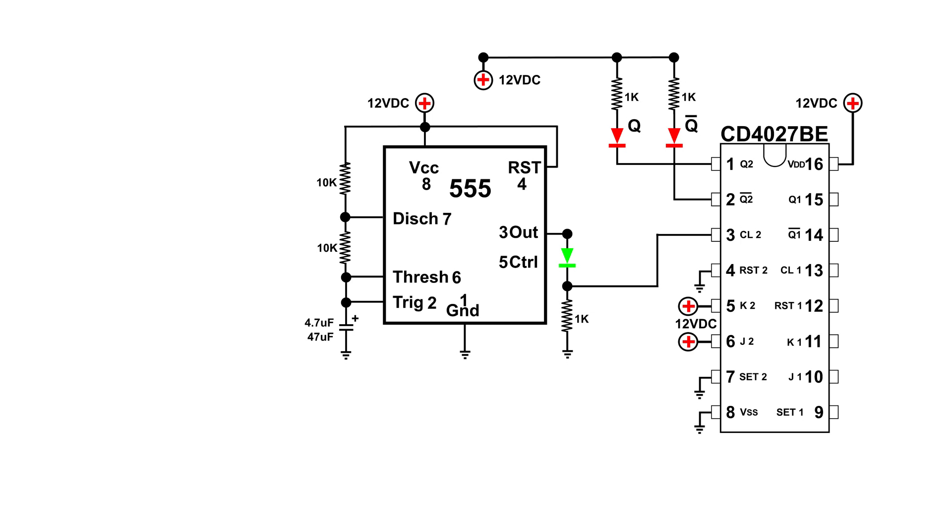And our output is pin 1 and pin 2. Pin 1 is Q, and pin 2 is not Q. And of course, we have to have power to this, so pin 8 goes to ground, and pin 16 goes to power.